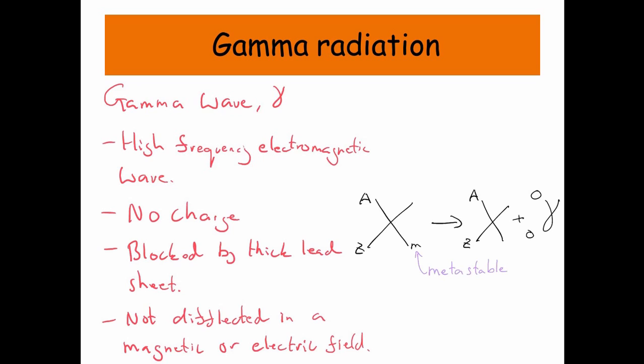And here, when a nucleus releases a gamma wave, it goes from being a metastable to a stable state. But the nucleon number and the proton number does not change.